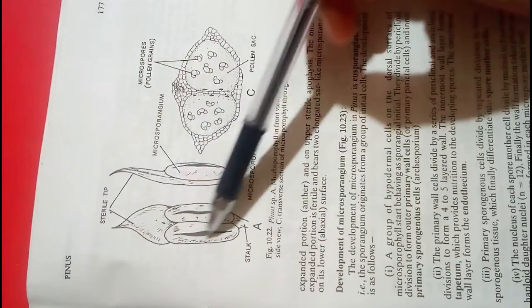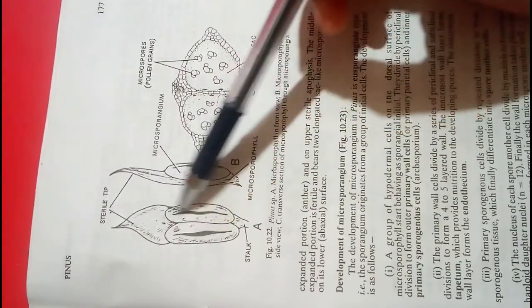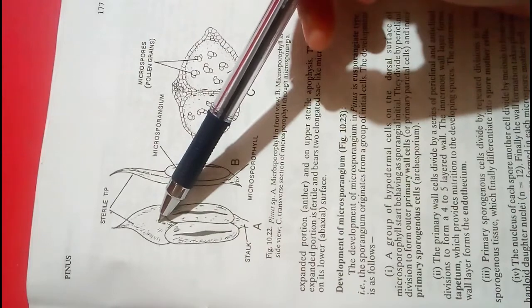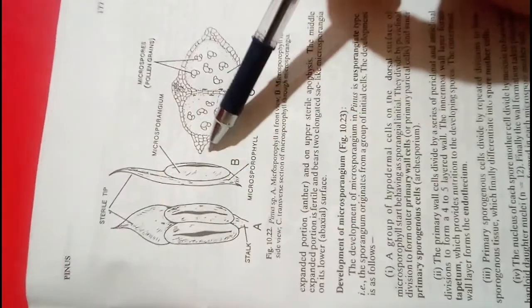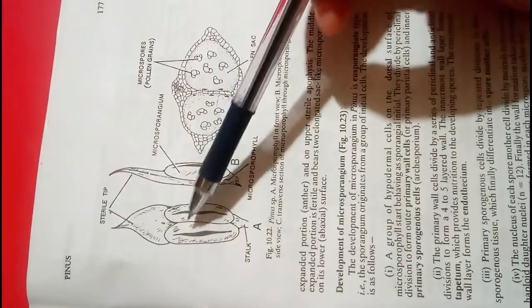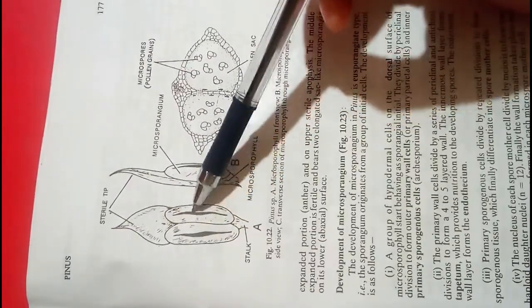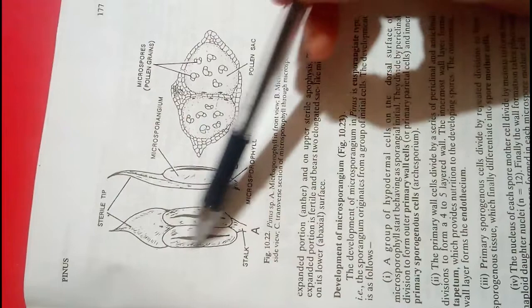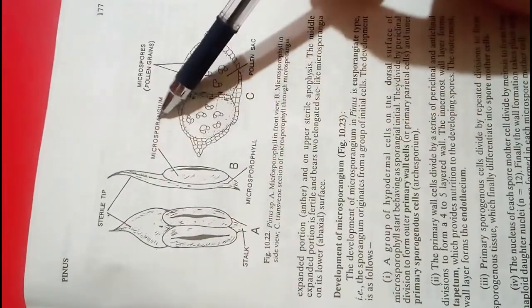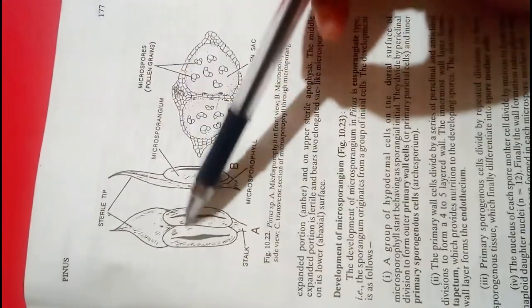The middle expanded portion is fertile and bears two elongated sac-like microsporangia. You can see these two microsporangia attached in this middle portion.